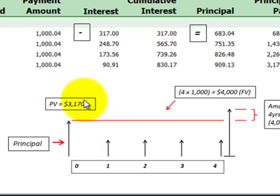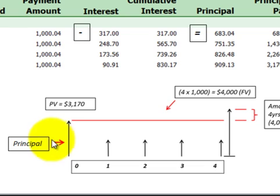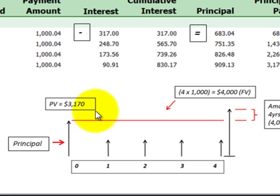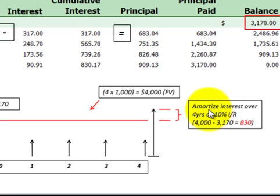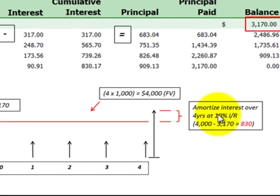This $3,170, their present value, is our principal amount of this loan. Now if we look at the total payments of $4,000 less their present value of $3,170, the difference is $830. That's the interest that we have to amortize over the life of the loan, either as interest payable or interest receivable.